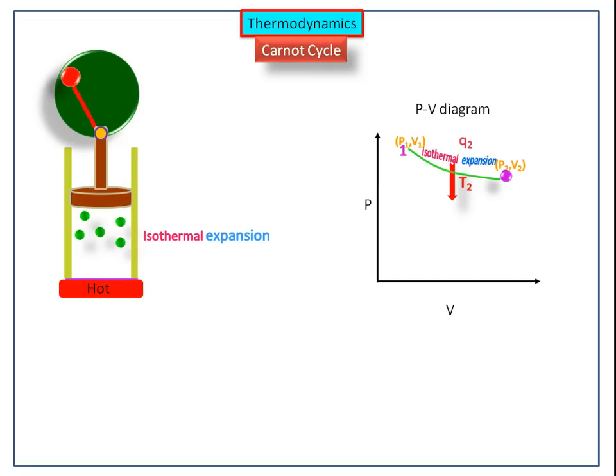The work done by the system in isothermal expansion is: −W1 = NRT2 ln(V2/V1).